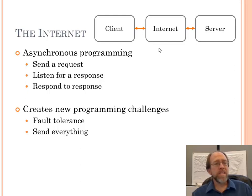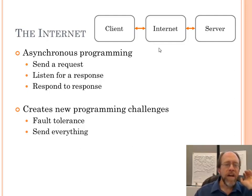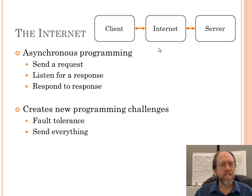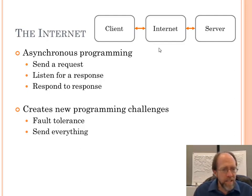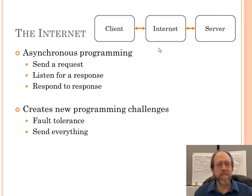The server is just listening for requests — it has something called a listener. When a request comes in, it figures out what to do and responds. This creates challenges for the way you program, because if you're writing a computer program and you call a function, you don't worry about whether it's going to come back. But on the internet, you can send a request to a server and nothing happens — the server just ignores you. So you have to have some level of fault tolerance and strategies for dealing with these situations.